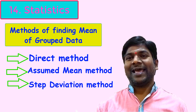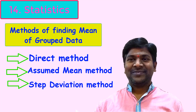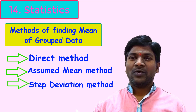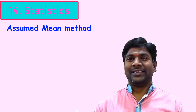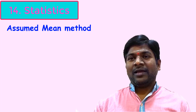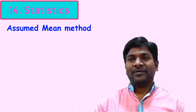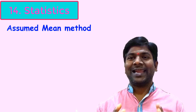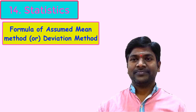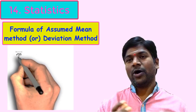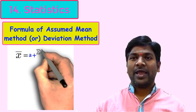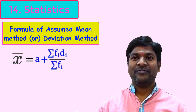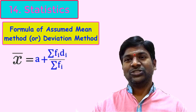In today's class, let us discuss the second method of finding mean, that is the assumed mean method. Let us start with the formula. The formula to calculate the mean of classified data using the assumed mean method is: mean x̄ = a + (Σf_i d_i) / Σf_i.